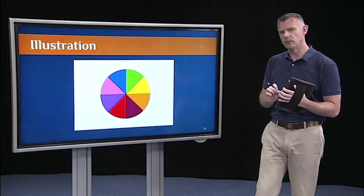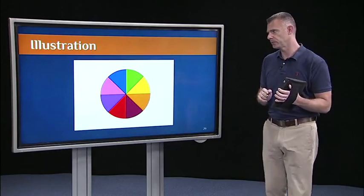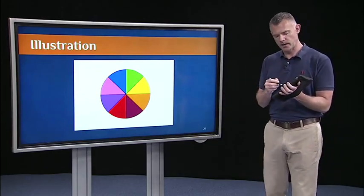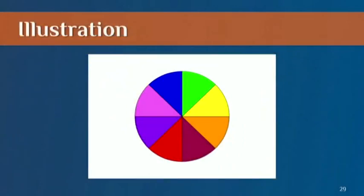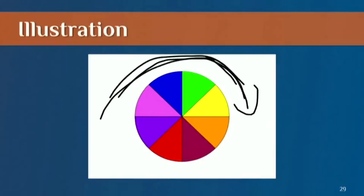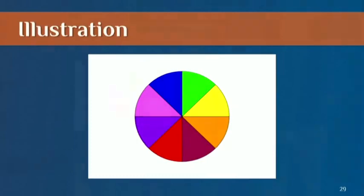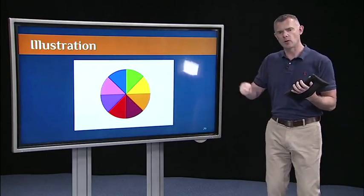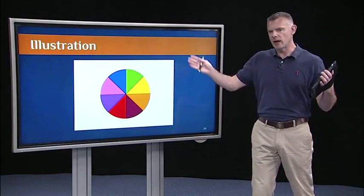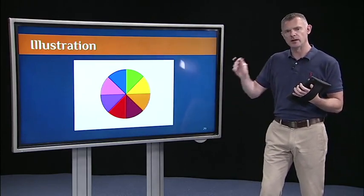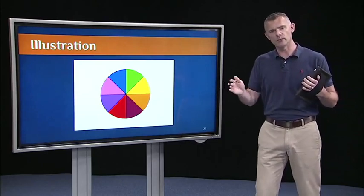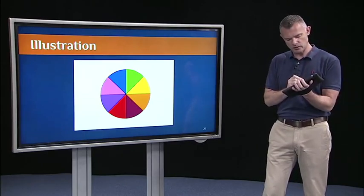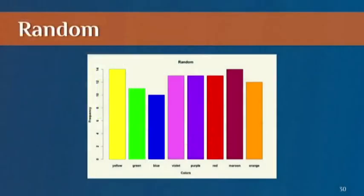Once we get that random selection, then we want to do random assignment to conditions. The way I want to illustrate this is through this color wheel. Imagine we have this color wheel, and I can spin this color wheel. We can spin it like on a game show, and it can randomly come up on any color. I can't predict which color it's going to come up. If it's truly random, and we spin this wheel over and over again, and we just count how many times I get yellow, how many times I get green, how many times I get blue, then we should have what's called a uniform distribution. In other words, it should look like this. This would be a random distribution of spins.